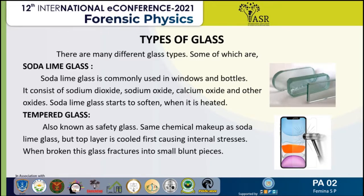Next is tempered glass. This is a type of safety glass processed by controlled thermochemical treatments to increase its strength compared with normal glass. Tempering puts the outer surface into compression and the inner surface into tension. The theoretical density for toughened glass is 2.44 grams per centimeter cubed.